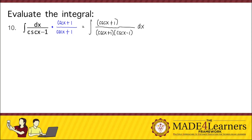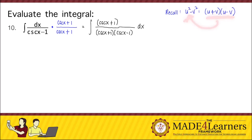Why did we multiply the given with the conjugate of the denominator? We recall that the difference of two squares, u squared minus v squared, can be factored into its conjugate binomials: u plus v times u minus v. So multiplying two conjugate binomials gives a difference of two squares. In multiplying the denominator, we copy the numerator — that's cosecant x plus 1 — and multiplying gives us cosecant squared x minus 1.